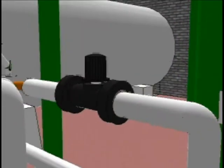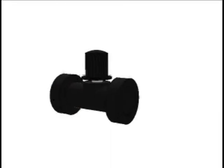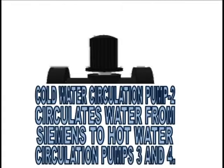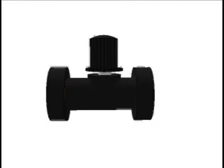Down under DA1 is cold water circulation pump 2 which circulates water from the Siemens to hot water circulation pumps 3 and 4.